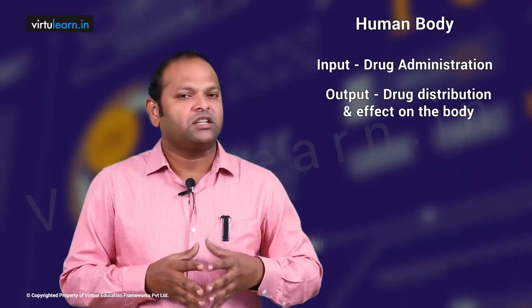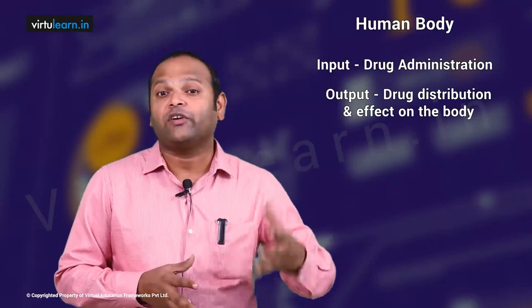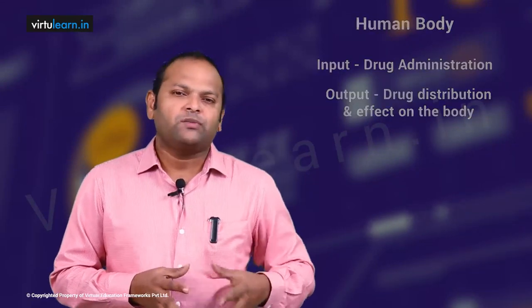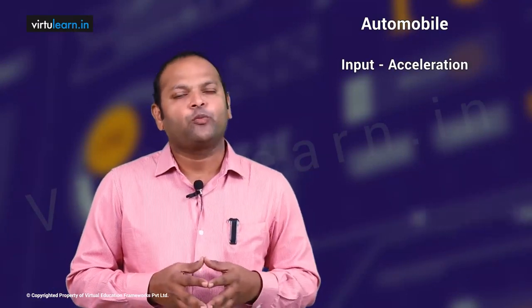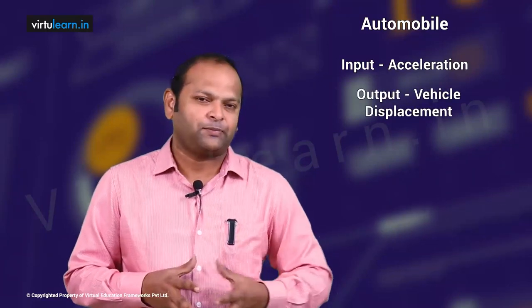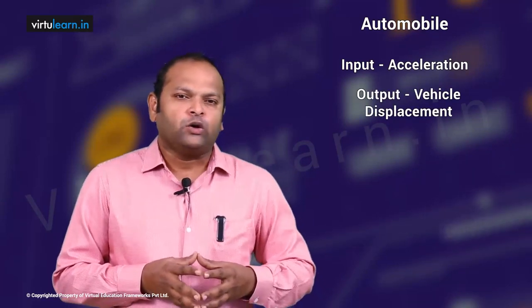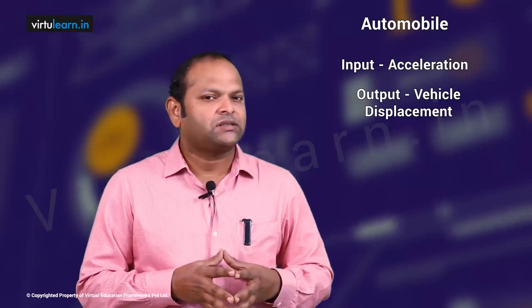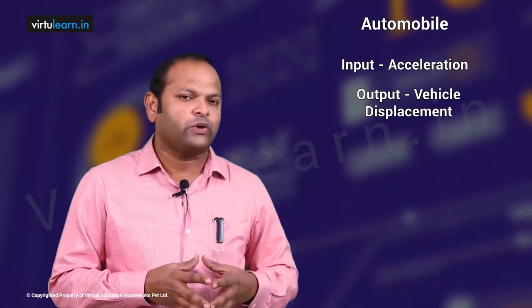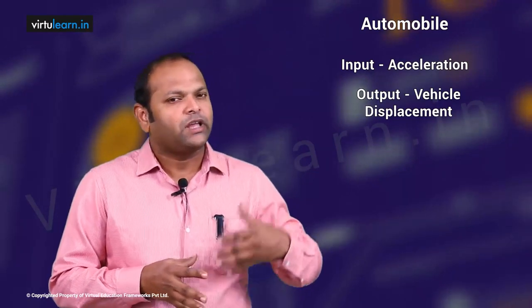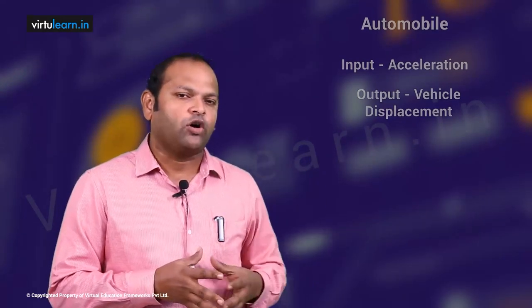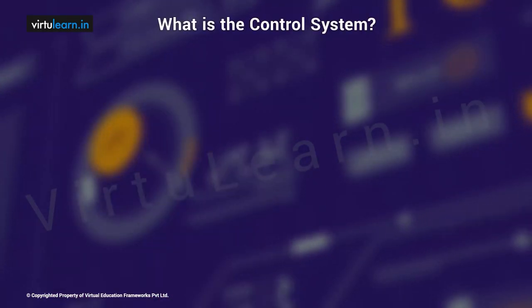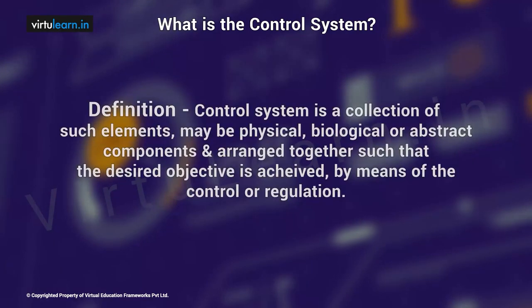If you take any vehicle, say a car or bus, the input is the acceleration and the output is the vehicle displacement. So we know that any system has an objective and all components are connected together to achieve it. Then what is a control system?